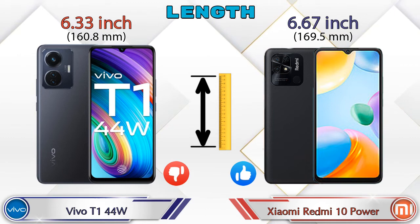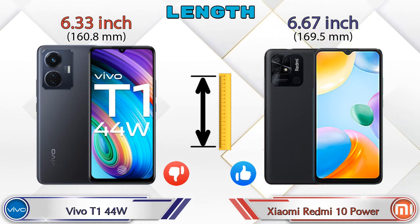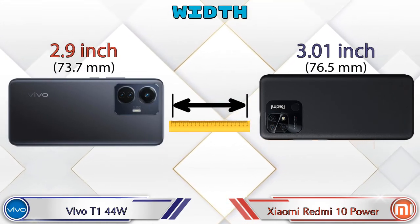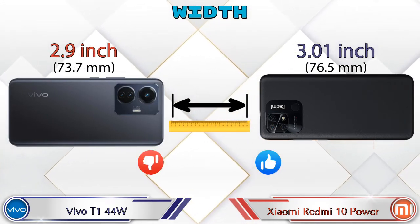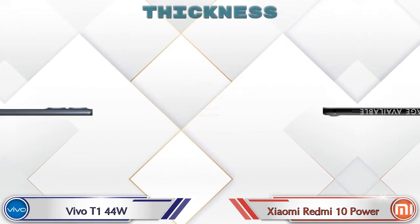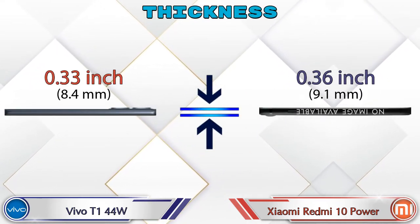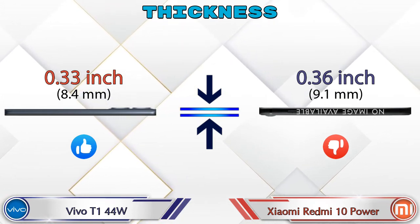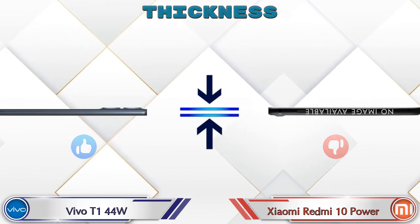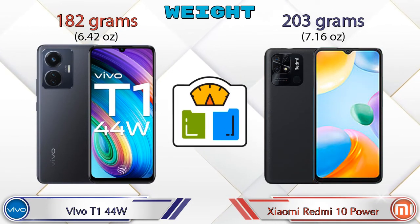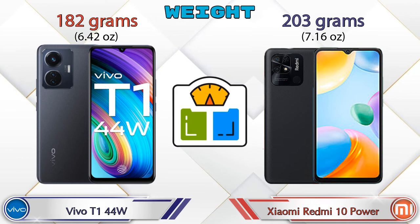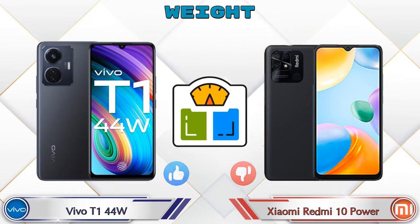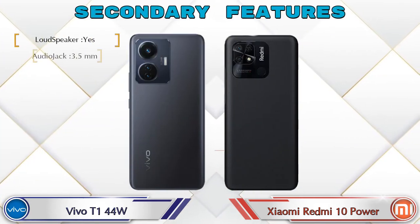Talking about the length of both phones: the T1 44 Watt is 6.33 inches and the Redmi 10 Power is 6.67 inches. Width: the T1 44 Watt is 2.9 inches and the Redmi 10 Power is 3.01 inches. Thickness: the T1 44 Watt is 0.33 inches and the Redmi 10 Power is 0.36 inches, which is bigger. Weight: the T1 44 Watt is 182 grams and the Redmi 10 Power is 203 grams, which is heavier.